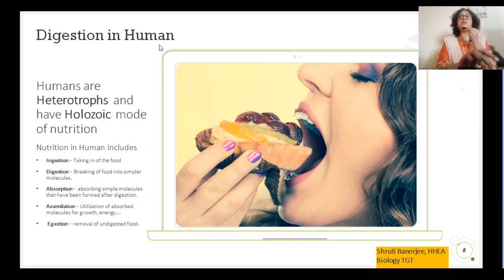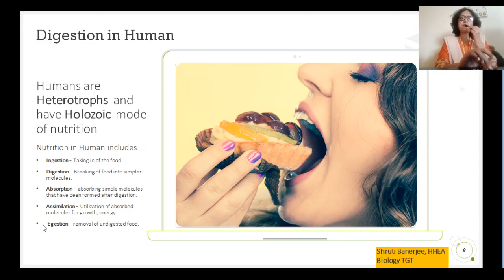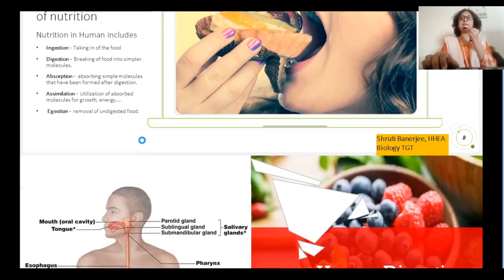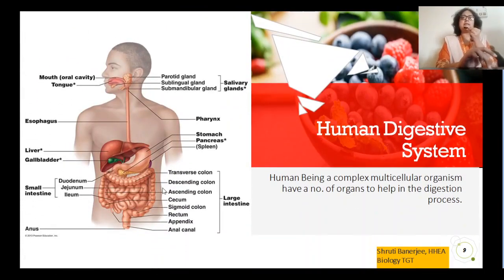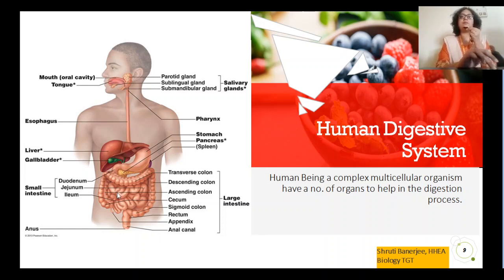Human beings belong to the heterotrophs and holozoic mode of nutrition. For these five steps to occur smoothly in the body, human beings have a very complex organ system known as the human digestive system. We are multicellular organisms and different organs help in the complete process of nutrition. Each specific organ and the enzymes released by these organs perform different duties to make the digestion process easy.